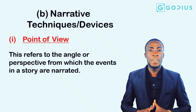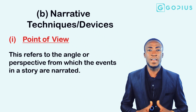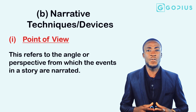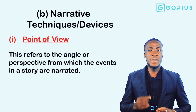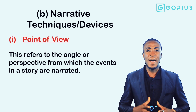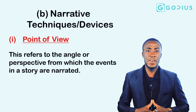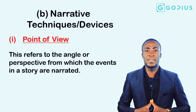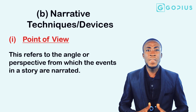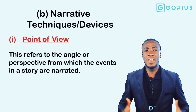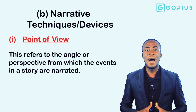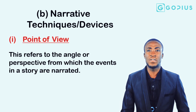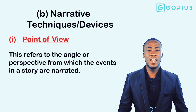as well as language usage in prose. Now let's begin with the first, which is narrative technique or point of view. When we talk about narrative technique, we are simply referring to the angle or perspective from which the events in a story are narrated — essentially the angle from which we the readers are listening as the narrator tells a particular story.